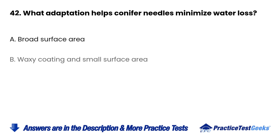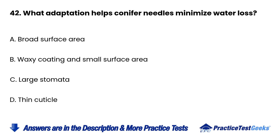Question 42: What adaptation helps conifer needles minimize water loss? a. Broad surface area. b. Waxy coating and small surface area. c. Large stomata. d. Thin cuticle.